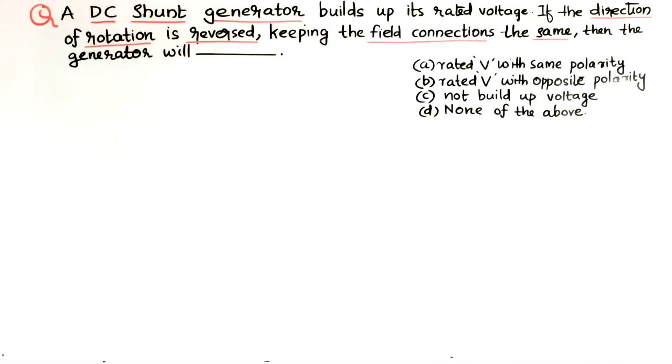This is a question from DC machines. A DC shunt generator builds up its rated voltage. If the direction of rotation is reversed, keeping the field connections the same,